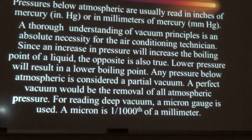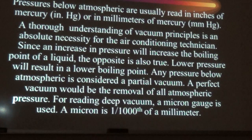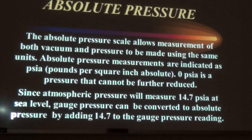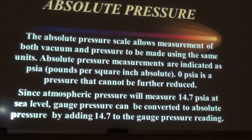Absolute pressure (PSIA) allows measurement of both vacuum and pressure using the same units without conversion — you don't have to add 14.7. Zero PSIA is pressure that cannot be further reduced. Since atmospheric pressure measures 14.7 PSIA at sea level, gauge pressure can be converted to absolute pressure by adding 14.7 to the gauge reading.